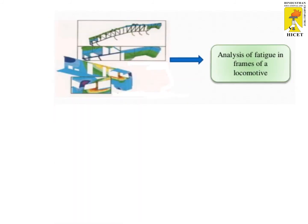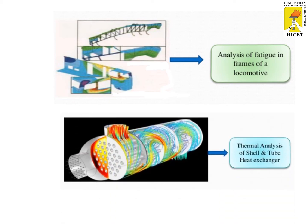Next, we have to analyze the frames of a locomotive by using fatigue analysis. Next is thermal analysis. As mentioned earlier, we use sheet metal in silencers. We have to analyze whether the heat is transferred from one end to another, and thermal-oriented analysis applies to heat exchangers as well. So we have to analyze that part; then only we can use the particular equipment for heat transfer purposes in the thermal field.